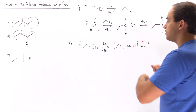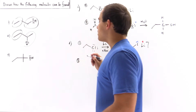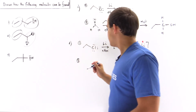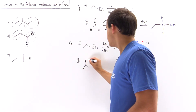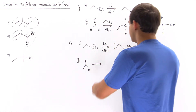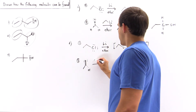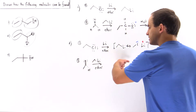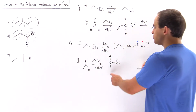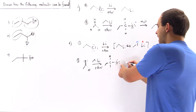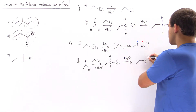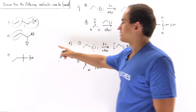Now that we have our organolithium reagent, in step two we react it with our aldehyde — not formaldehyde, but an aldehyde, since this carbon has a methyl group and one H attached. We draw the aldehyde with H and CH3, react it with the organolithium reagent in ether, forming the intermediate where one substituent is H and the other is methyl. We then add water to protonate the oxygen and form the secondary alcohol product.